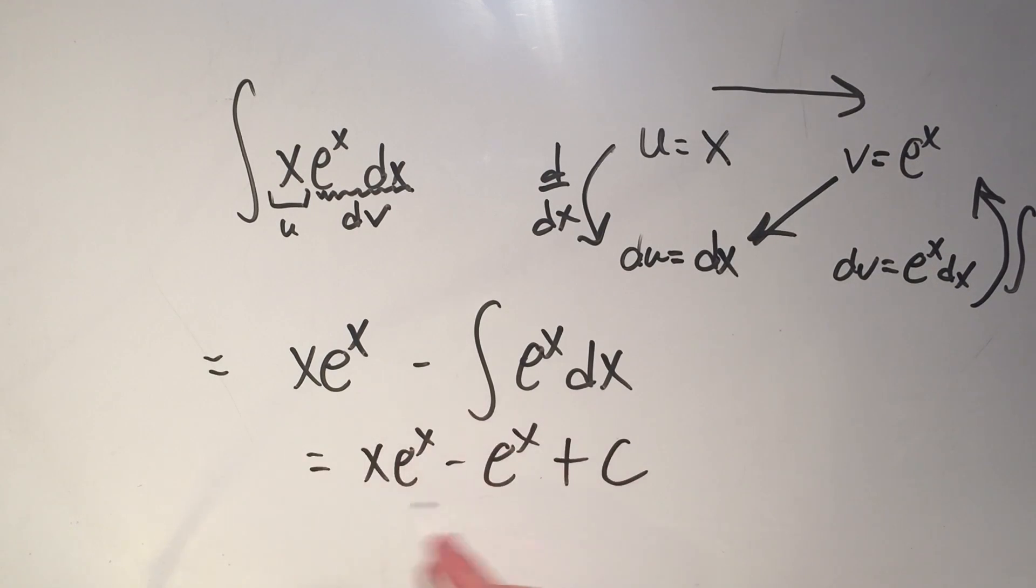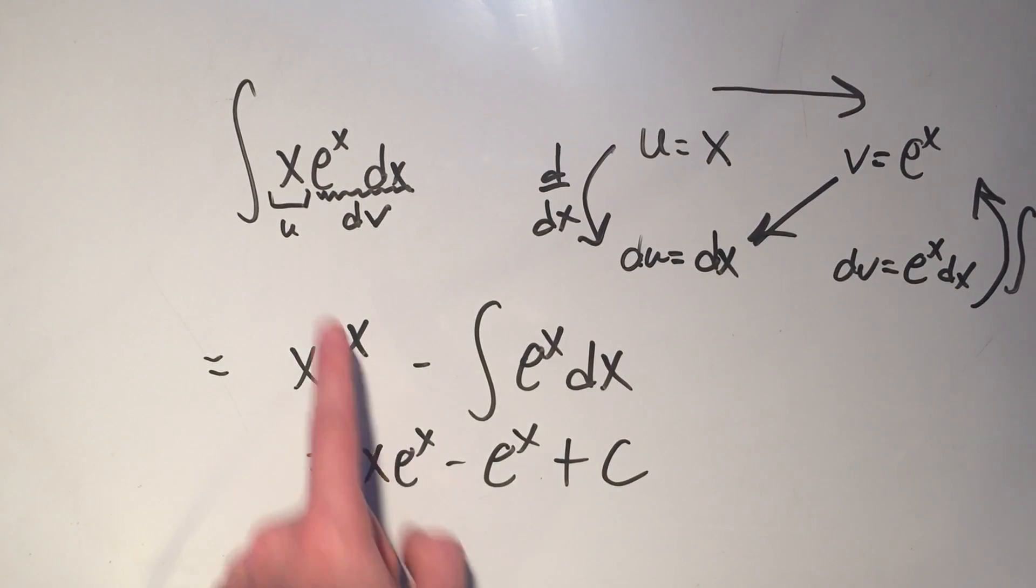And you can check that if you took the derivative of this, you'd have to use a product rule, but it would, in fact, equal x times e to the x.